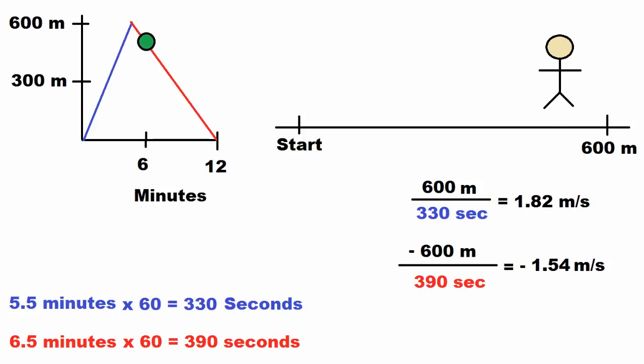Then for the second part of the walk, we're going to take the negative 600 meters as we're traveling backwards over the 390 seconds,